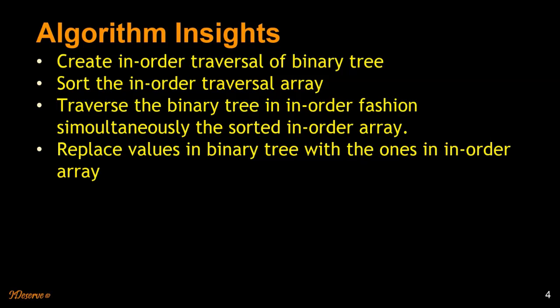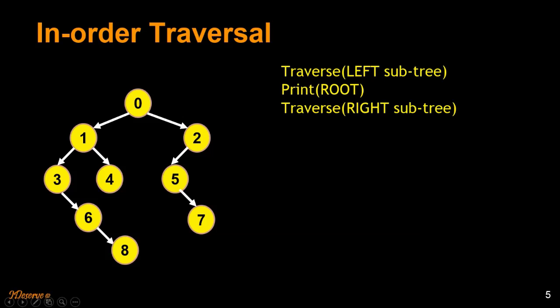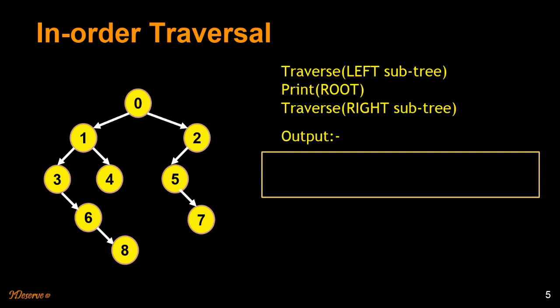This will become clear as we go through the algorithm and visualize it. So this is the given binary tree — we are going to traverse it in an inorder fashion and construct an inorder array. In inorder traversal, we traverse the left subtree first. When the left subtree traversal is done we print out the root, then we traverse the right subtree. After doing that we will populate the output, which is basically an inorder traversal array.